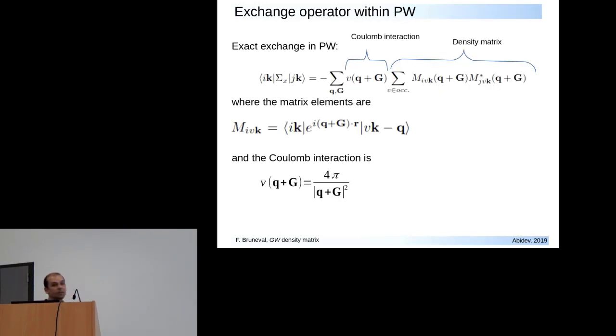Why is it so? If you look at the expectation value of the exchange operator in between states i and j at a given K-point, this is the expression. This expression has a sum over all the Q-points of the Coulombic interaction, and then you have matrix elements. The Coulomb operator in reciprocal space is 4π over Q². So if you try to evaluate this at Q equal zero, then you might have a problem.